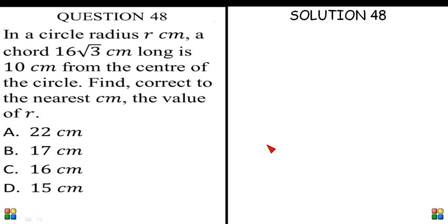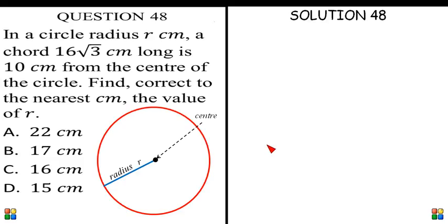We have a circle like this and the center of the circle is shown. Then the radius of the circle is this, radius R. Then we have a chord, which is 16√3 centimeters. That's the chord.